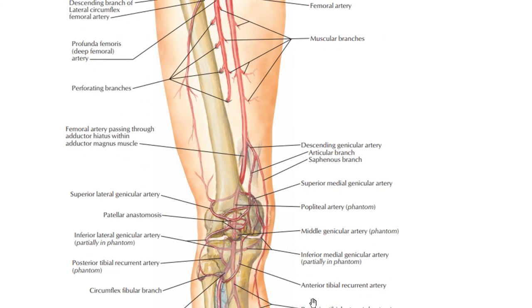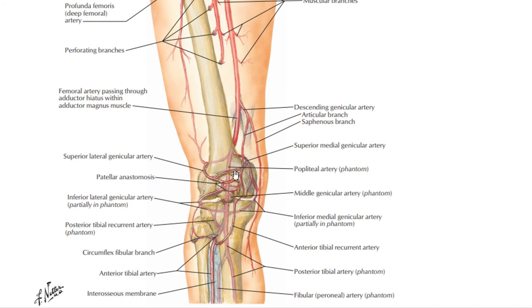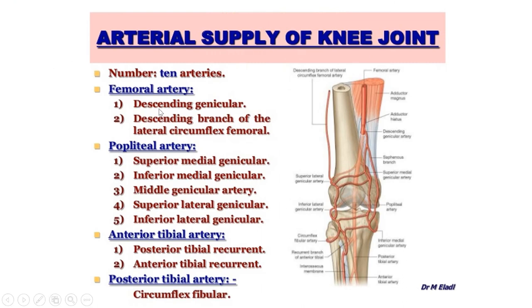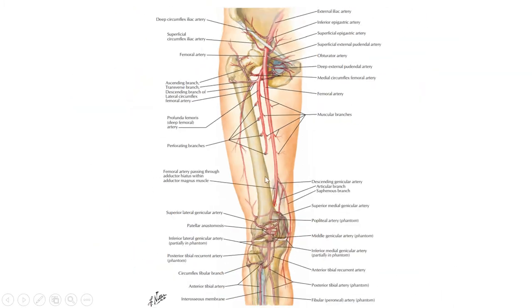The blood supply of the knee joint comes from the periarticular plexus, which has 10 contributing branches. The femoral artery contributes two branches: the descending genicular artery and the descending branch of the lateral circumflex femoral artery. The profunda femoris gives rise to the lateral circumflex femoral artery, which has ascending, transverse, and descending branches — the descending branch participates in the periarticular plexus. The descending genicular artery arises directly from the femoral artery; 'genu' is another name for the knee joint.